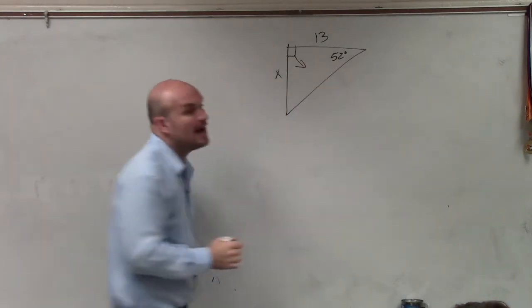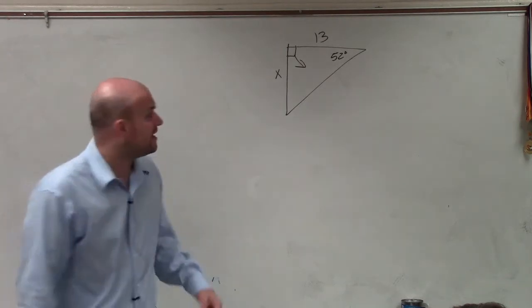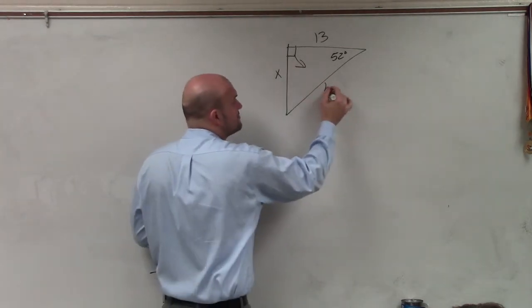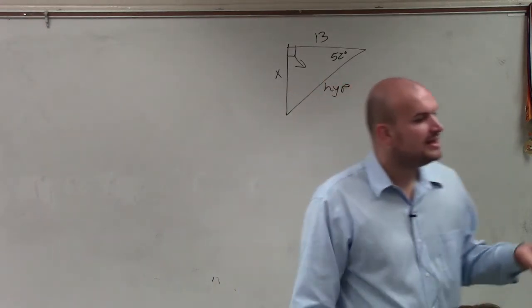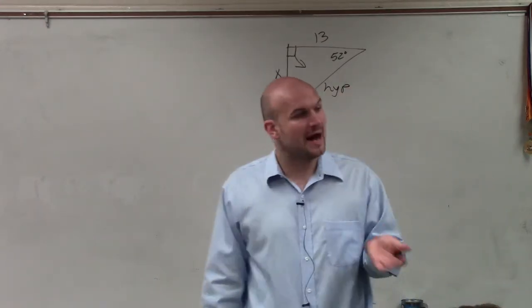Regardless of where the angle is, the hypotenuse is the easiest to identify. It's directly across from your right angle, hypotenuse. Now, the next definition we talked about is the adjacent side compared to the opposite side.